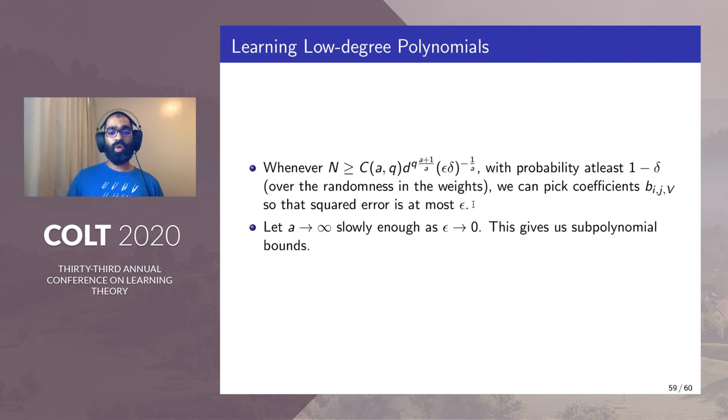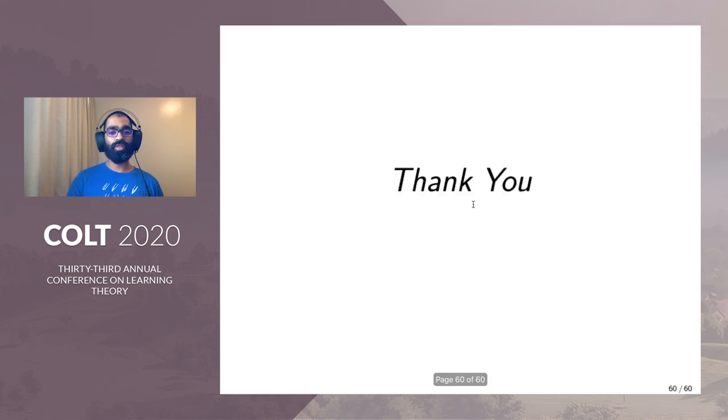Letting a tending to infinity slowly enough as ε tends to 0 this gives us the subpolynomial bound which we desire.